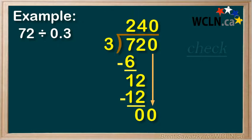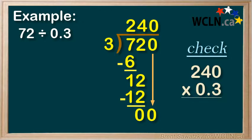And of course, we can always check our answer. Remember that division and multiplication are opposites, so 240 times 0.3 should give us our 72. So let's check. 3 times 0 is 0. 3 times 4 is 12, so we'll mark down the 2 and carry the 1. And 3 times 2 is 6, plus our carried 1, we get 7.